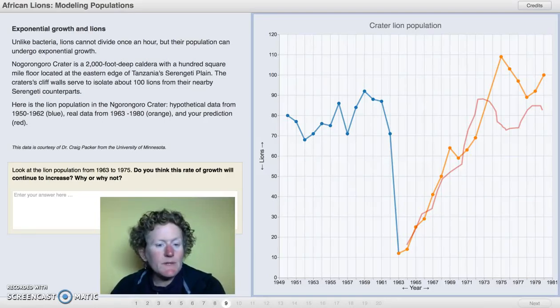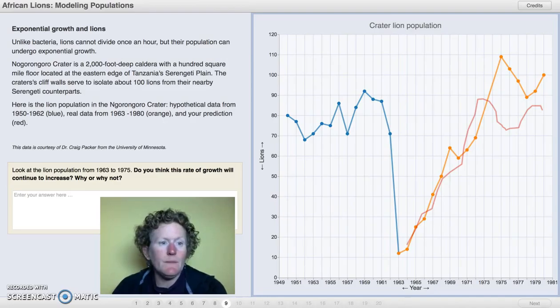We talked about exponential growth in bacteria and how it increases very quickly, but lions are not bacteria. Unlike bacteria, lions cannot divide once an hour, but their population can undergo exponential growth.